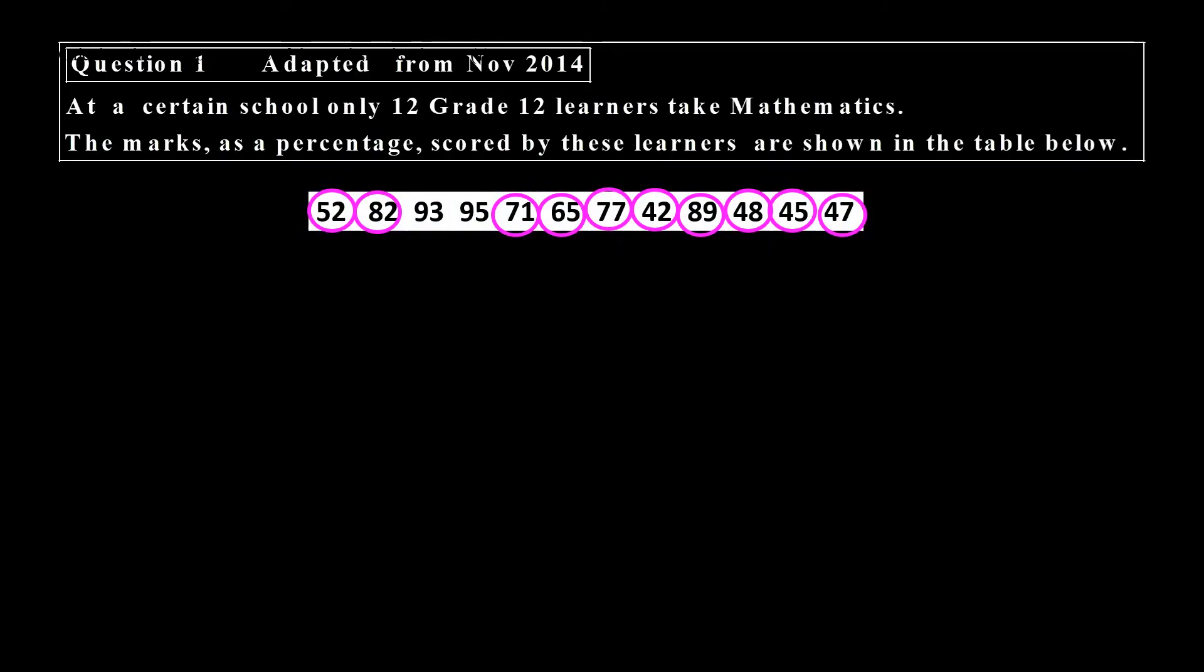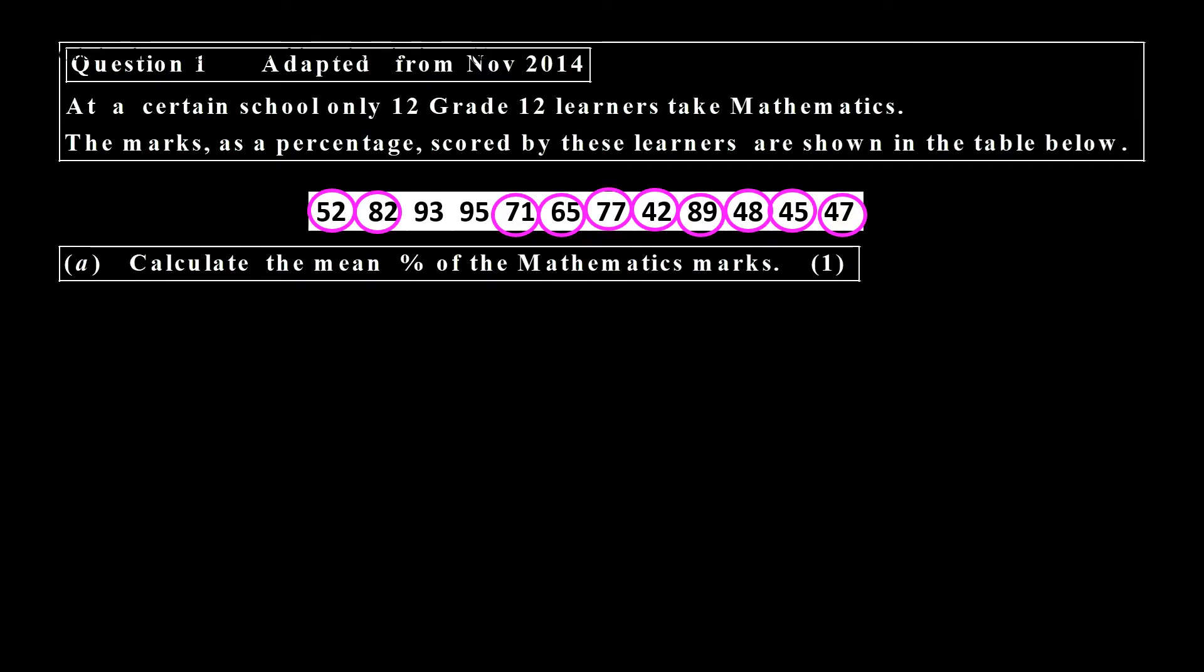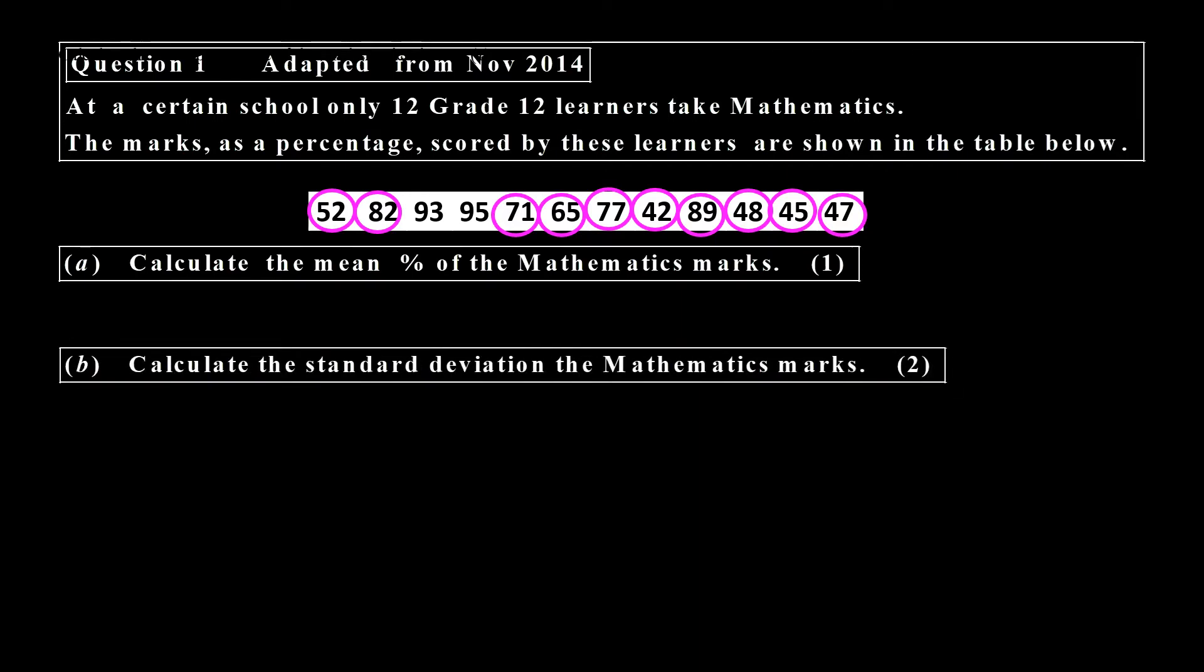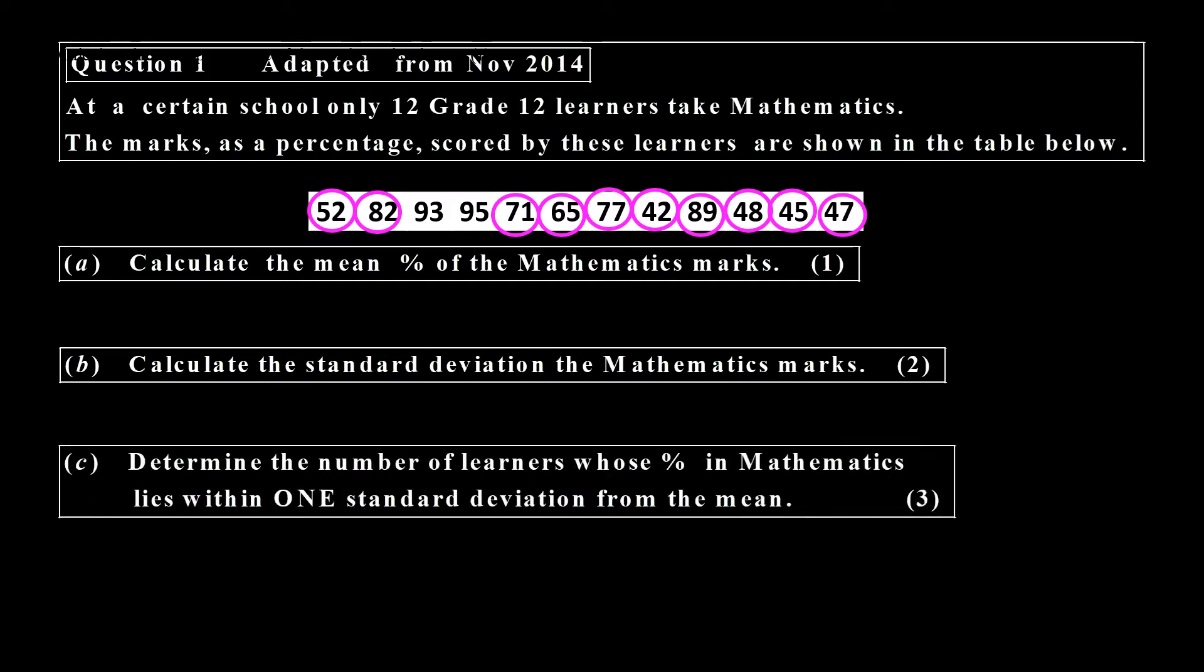Then we have the first question here. We have a school, 12 grade 12 learners. First of all we have to calculate the mean. If you calculate that, then we have to calculate the standard deviation and then the number of learners with percentage in mathematics. Let's look at the first one.